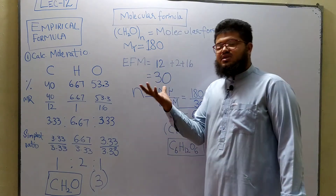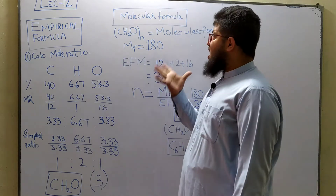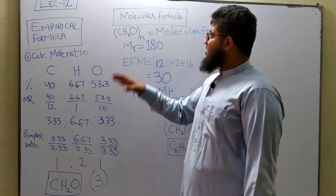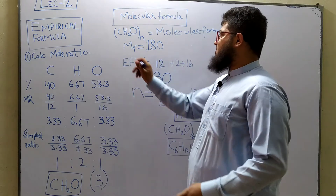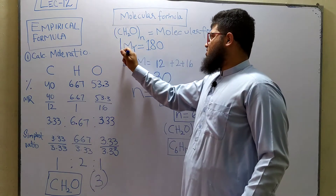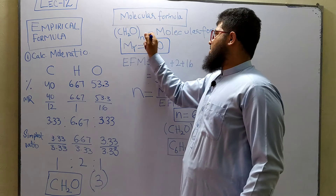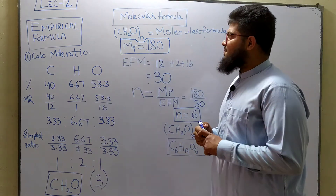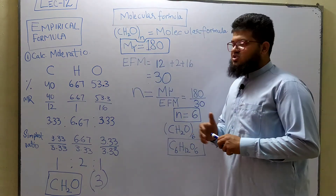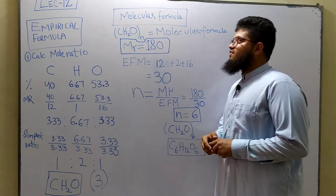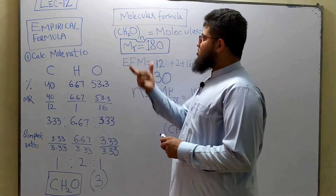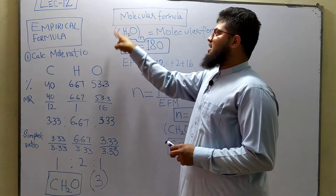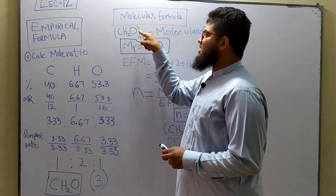After the empirical formula, the examiner's next frequent question is how to calculate the molecular formula of the compound given the molecular mass. The examiner gives you the relative molecular mass — in this case 180 — and asks you to calculate the molecular formula. The empirical formula gets bracketed by an integer n.